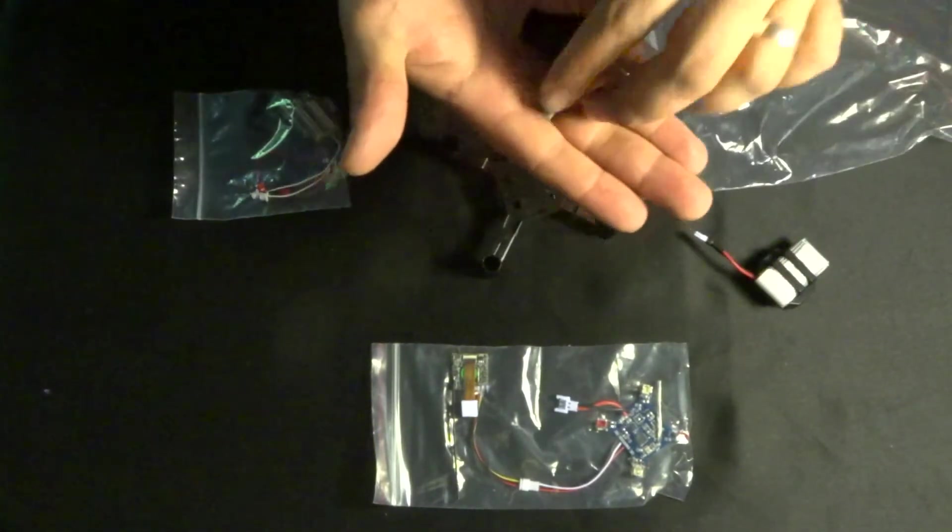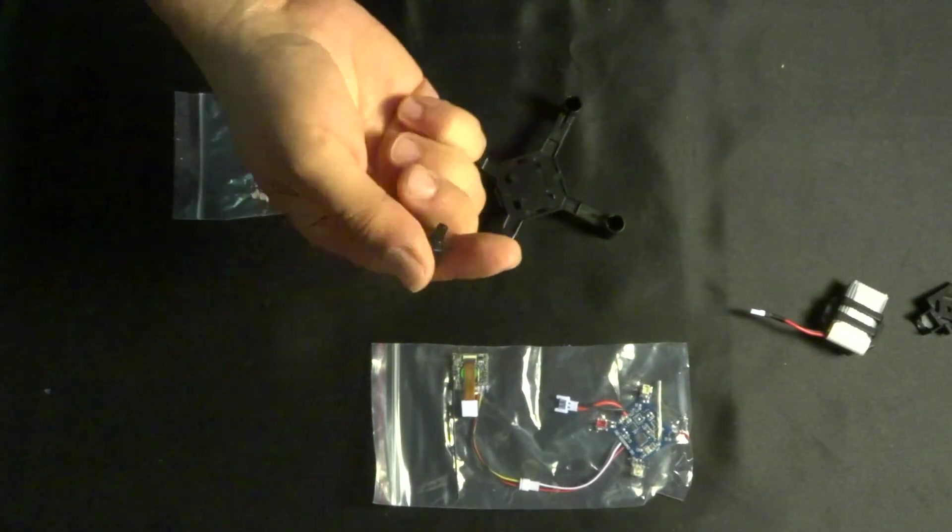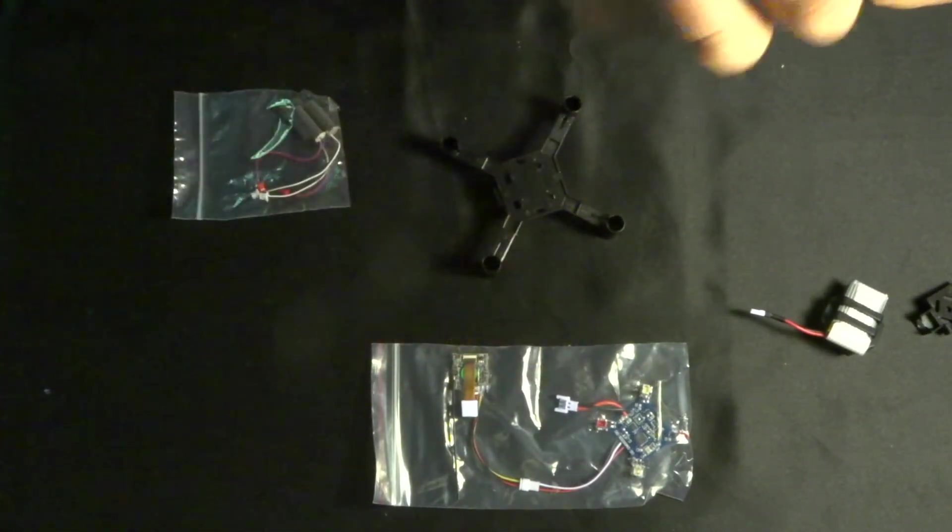We've got a nice little battery there as well and another bit of molded plastic. Now these are for the transmitter, so I'm going to put these back in the bag because we don't need those yet.